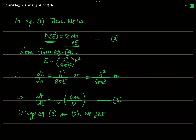To find the expression for D(E) we need the derivative dN/dE, obtained from the energy eigenvalue expression E = h²n²/8mL². Differentiating with respect to n: dE/dn = h²·2n/8mL² = h²n/4mL². Therefore, dN/dE is the reciprocal: dN/dE = 4mL²/(h²·n).